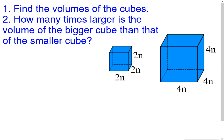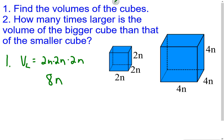I want us to calculate the volume of two cubes. For the first one — the little cube — remember to find the volume of a cube we take the area of the base times the height. The base is 2n times 2n, then we multiply by the height of 2n. Focusing on the twos: 2 times 2 times 2 is 8, and n times n times n is n to the third using the product of powers rule. So the volume of the little cube is 8n³.